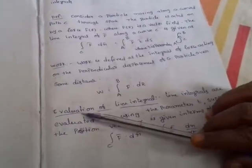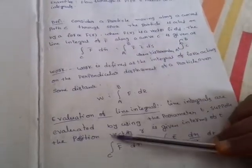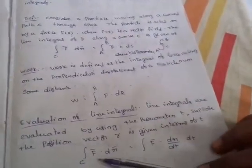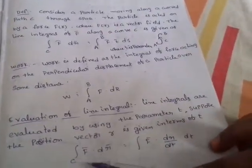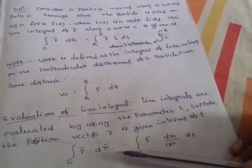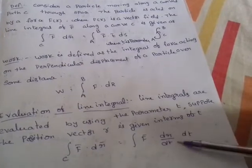Now we look at the evaluation of line integral — how to evaluate the line integral. Line integrals are evaluated by using the parameter T. Suppose the position vector R-bar is given in terms of T. The formula is integral over C of F-bar dot dR-bar, which becomes integral of F-bar dot (dR-bar/dt) dt.